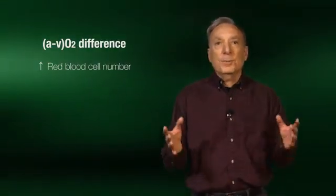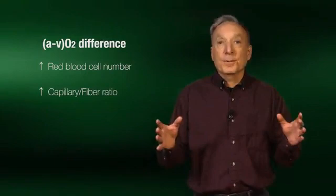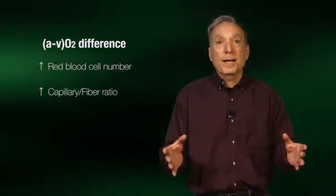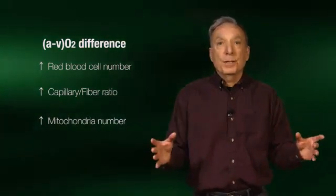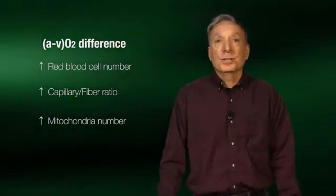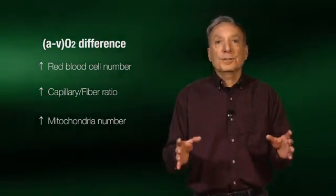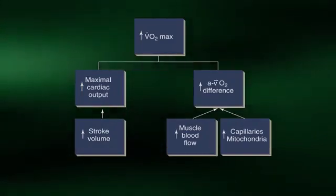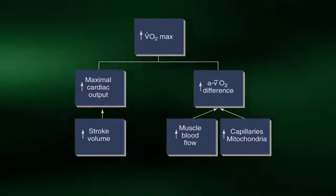The other component to the increase in VO2 max with training is the arterial venous oxygen difference. An increase in red blood cell number will improve oxygen transport to muscles. An increase in the number of capillaries per muscle fiber will enhance oxygen diffusion into muscles. Finally, more mitochondria will allow for greater utilization of the oxygen delivered to muscles. Together, these training adaptations result in a greater arterial venous oxygen difference at any given workload. This figure highlights the significant endurance training adaptations associated with the cardiovascular system and VO2 max in particular.